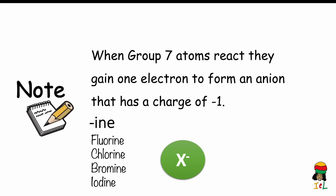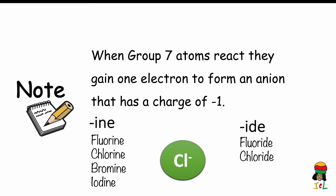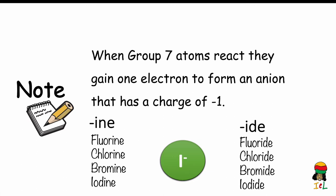However, once the halogen reacts, the anion is formed and the name now ends with the suffix "-ide". So after the fluorine atom bonds it becomes fluoride (F⁻). Chlorine becomes chloride (Cl⁻). Bromine becomes bromide (Br⁻). And iodine becomes iodide (I⁻).